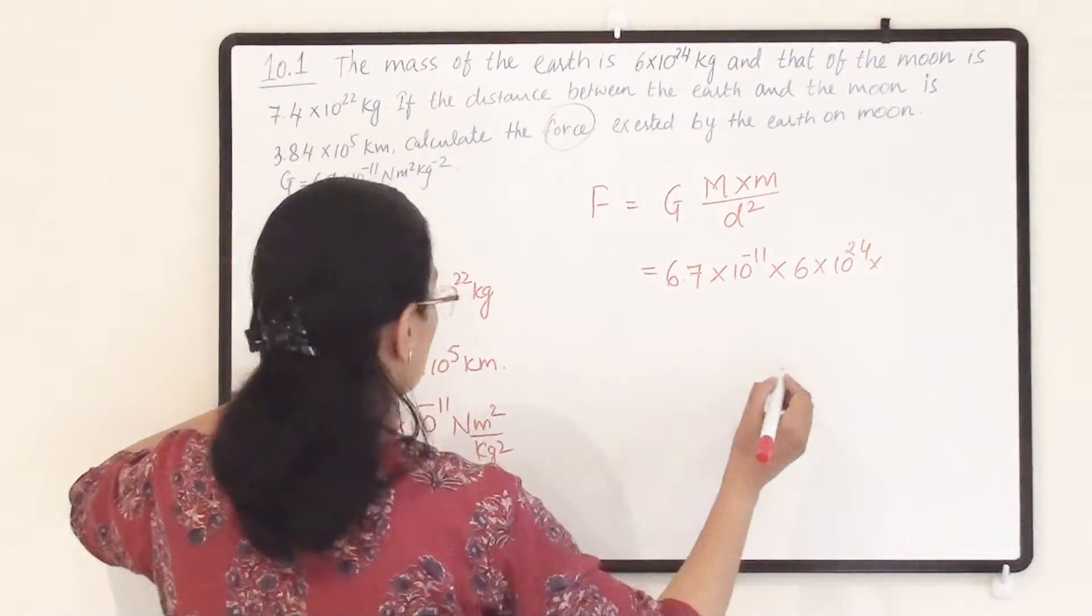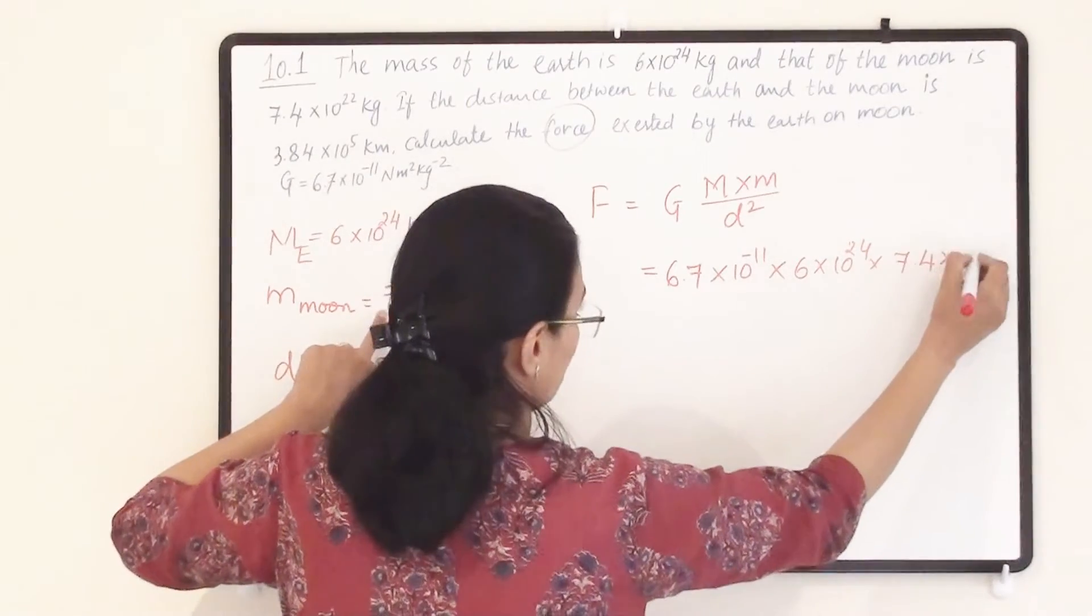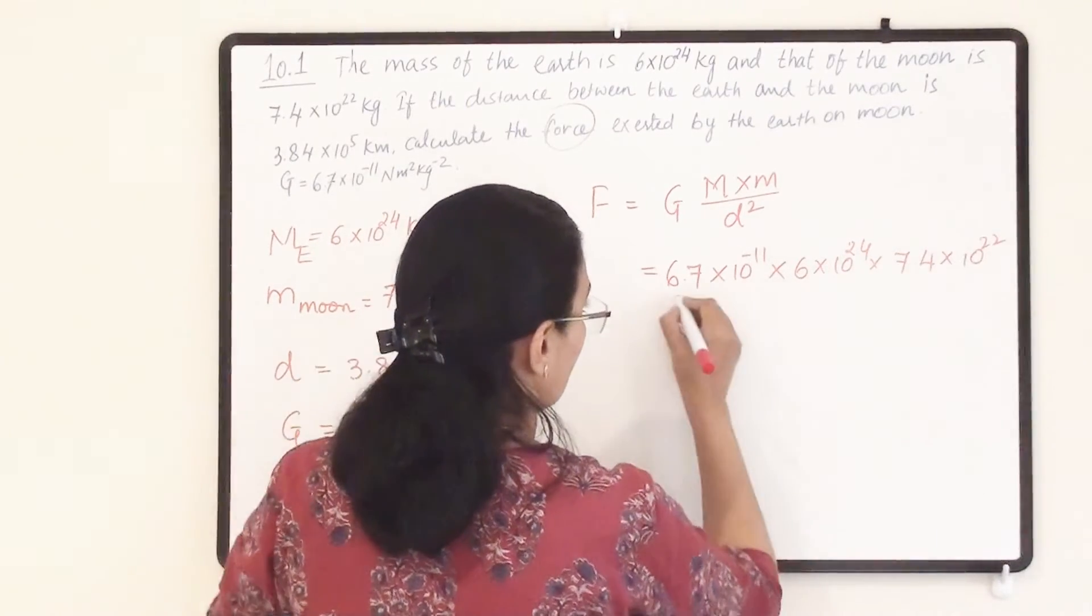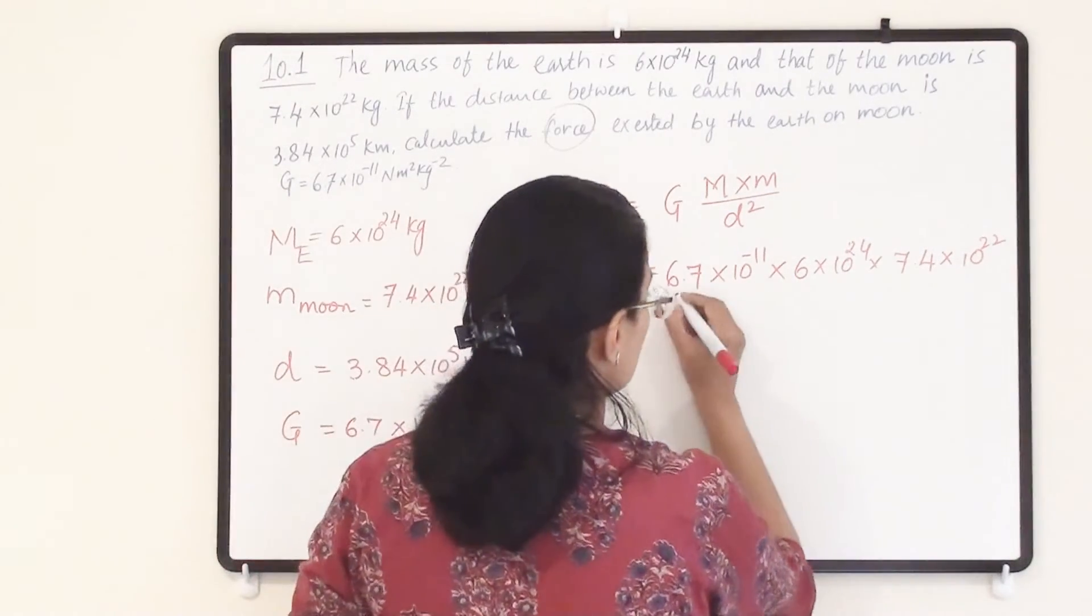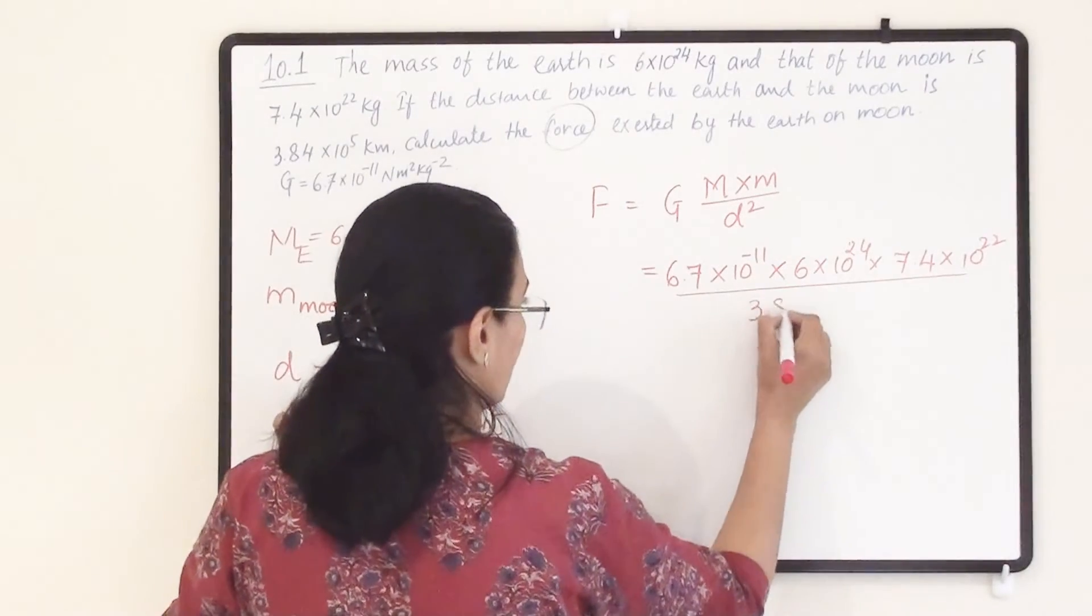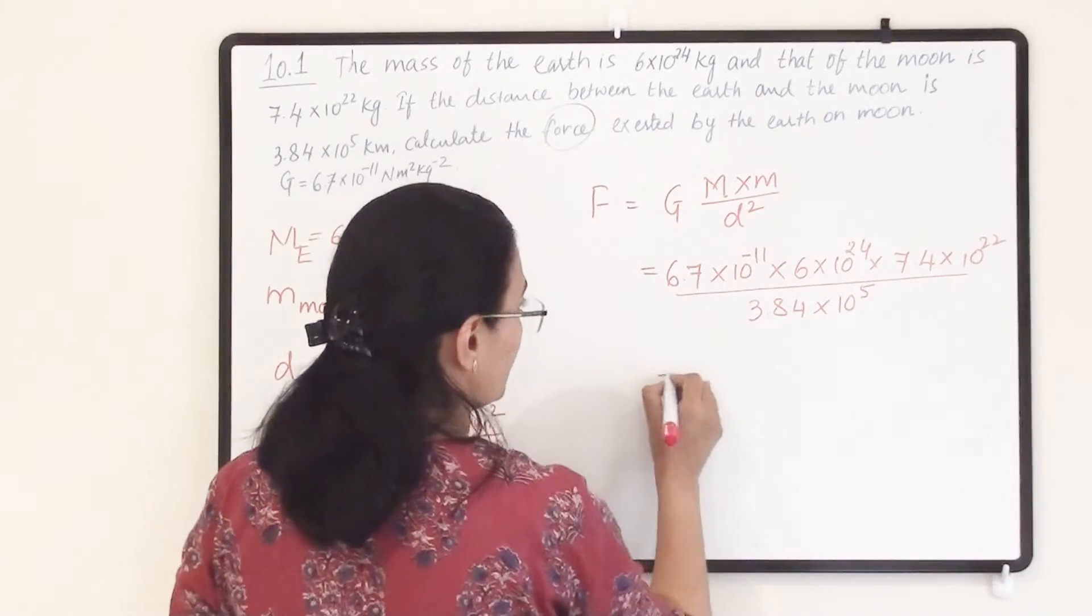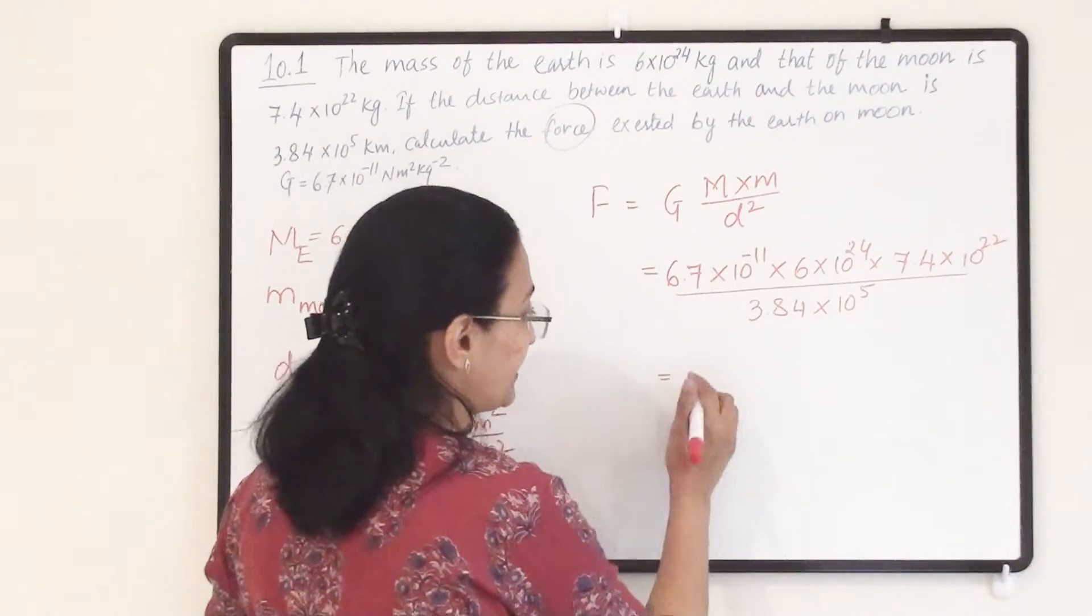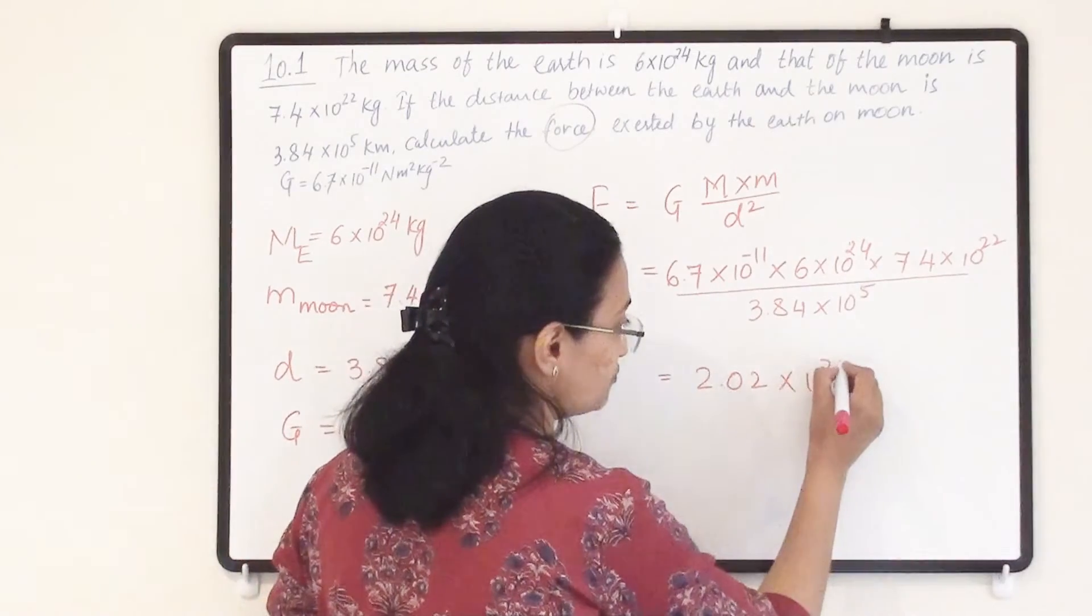Then m, the mass of the moon, is 7.4×10²², divided by their distance, which is 3.84×10⁵. Solving this, we get the answer 2.02×10²⁰.